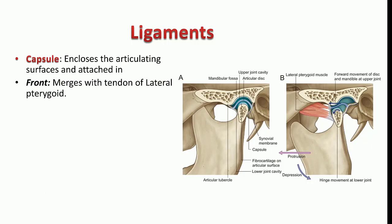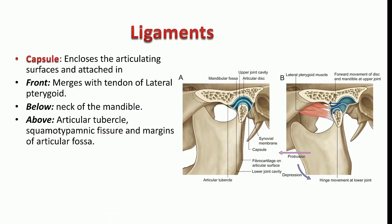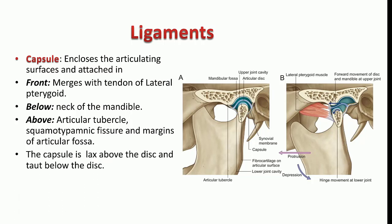The capsule is attached anteriorly to the articular tubercle and above to the squamotympanic fissure. The tendon of the lateral pterygoid merges and blends with the capsule anteriorly. Below, the capsule is attached to the neck of the mandible — both front and behind. Apart from that, the capsule is also attached to the periphery of the articular margins, surrounding the articular fossa.